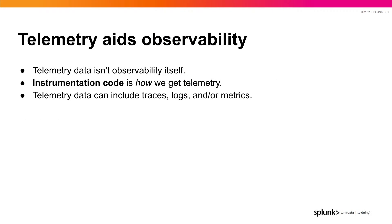Telemetry aids observability. Telemetry data isn't observability itself — it's really what aids us in understanding what's going on with our application. Instrumentation code is exactly how we get this telemetry, and this telemetry data can include traces, logs, and metrics. We need to understand that telemetry is what exactly aids observability.